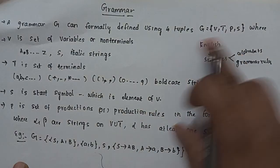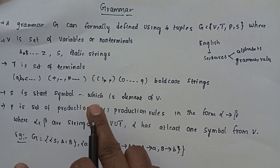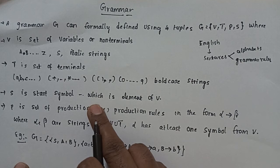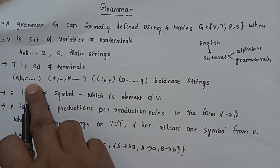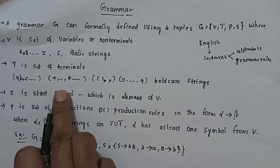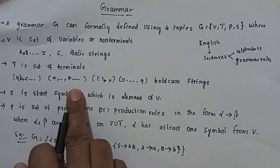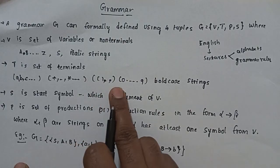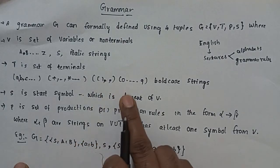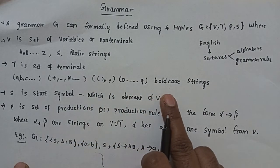Next, T is a set of terminals. The set of terminals includes small letters a to z, operators like plus, minus, multiplication, and any other operators, parentheses, and numbers from 0 to 9.